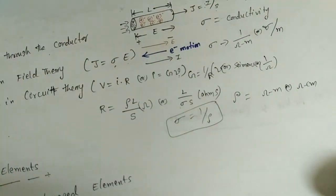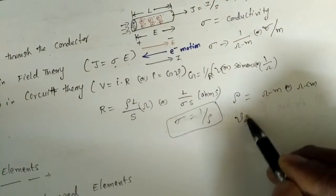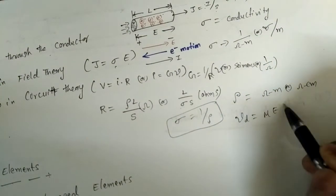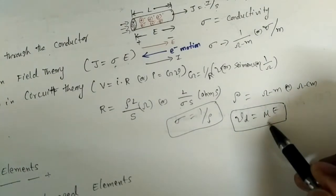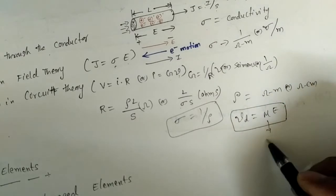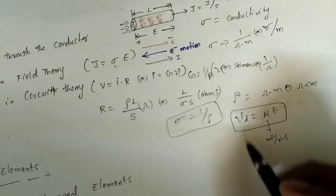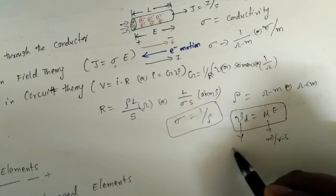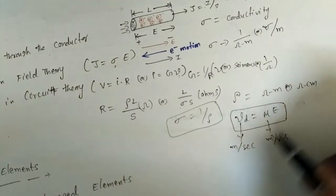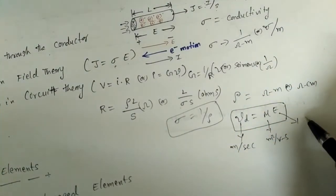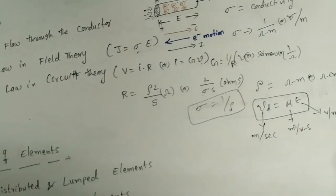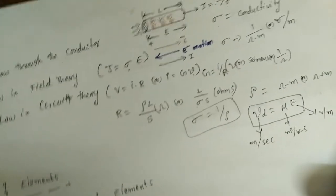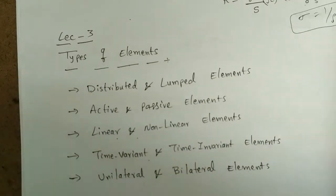We also discussed drift velocity: Vd = μE, where μ is the mobility of free electrons with units of meter squared per volt-second. Vd is in meters per second and E is in volts per meter. We should know all these units and equations.